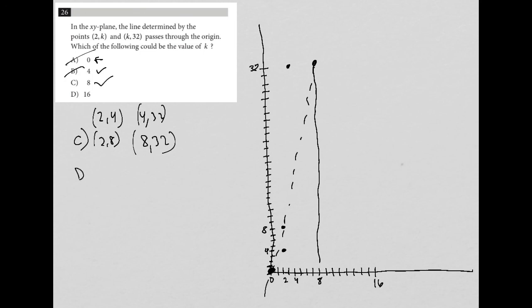And then let's just try choice D, which is (2,16) and (16,32). So (2,16), again, 9, 10, 11, 12, 13, 14, 15, 16. 16 is here. So that would be there, basically. And (16,32) would just be right above 16 at 32, which is here. And that definitely does not, right? Like that's too wide.